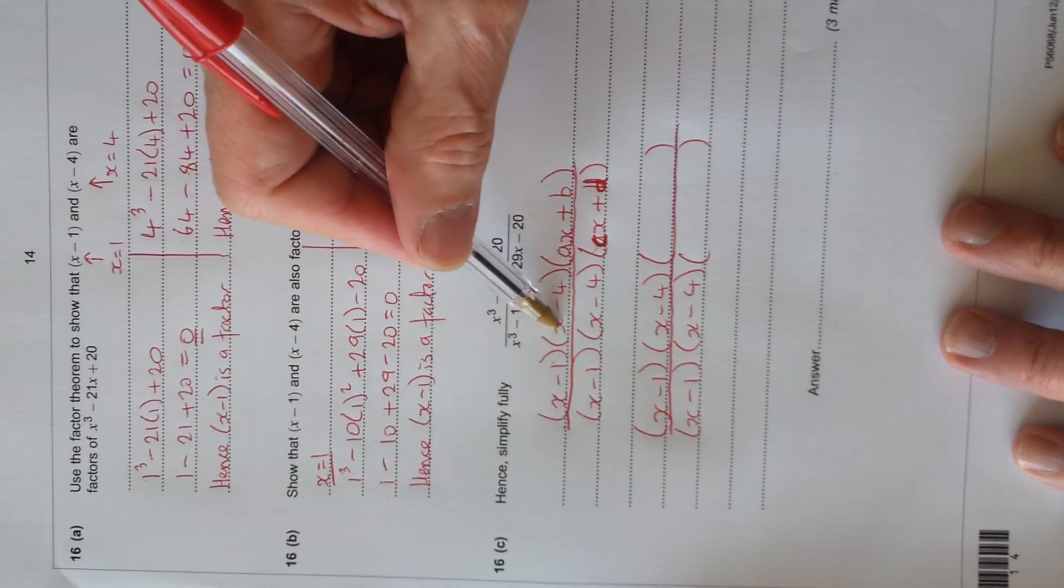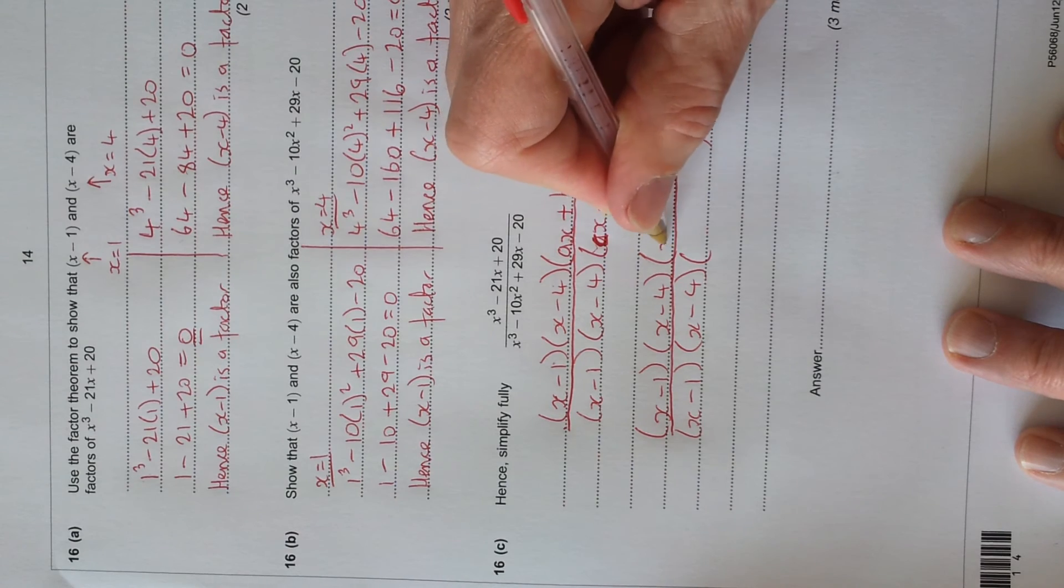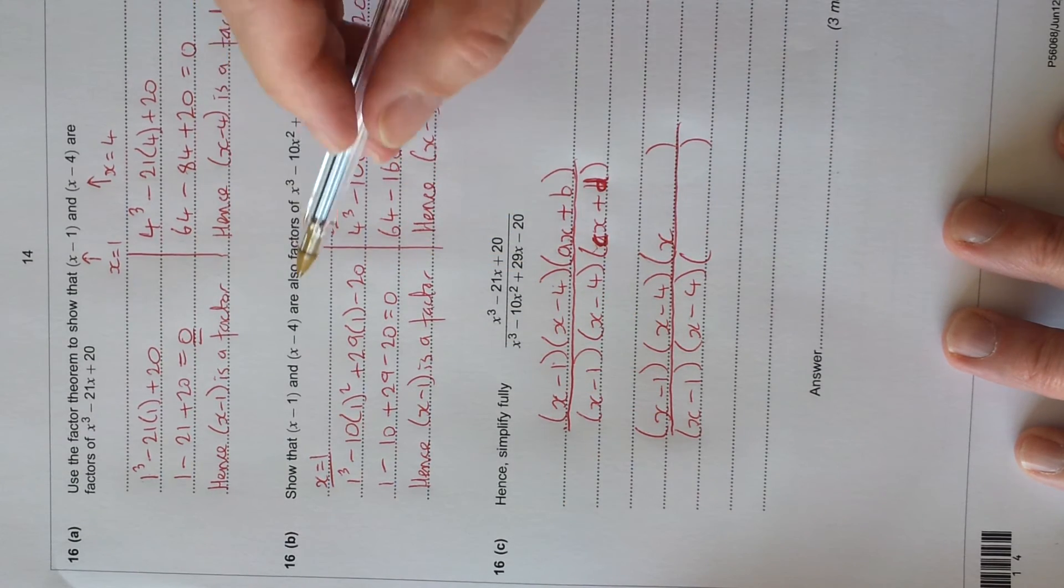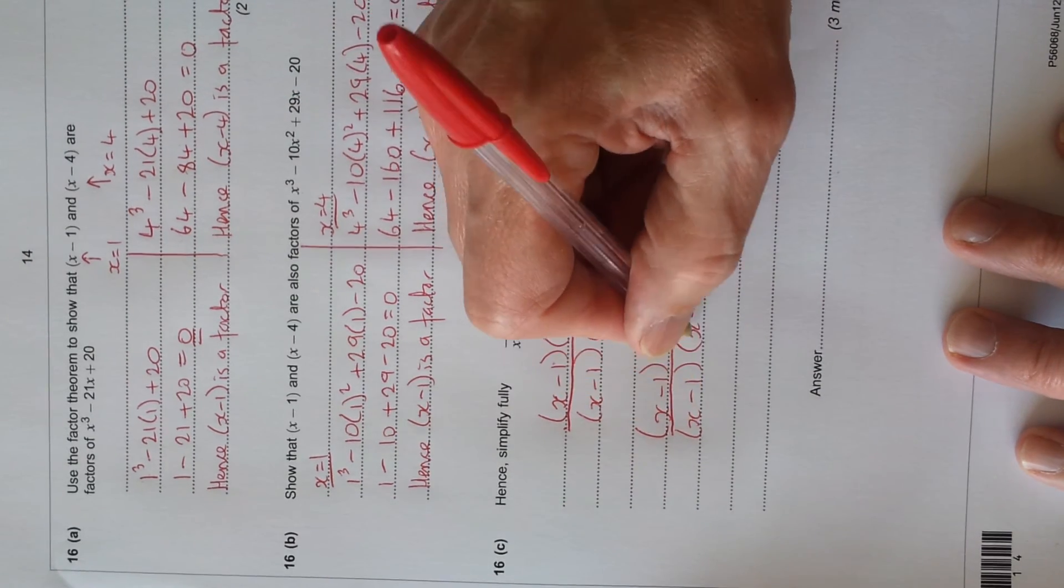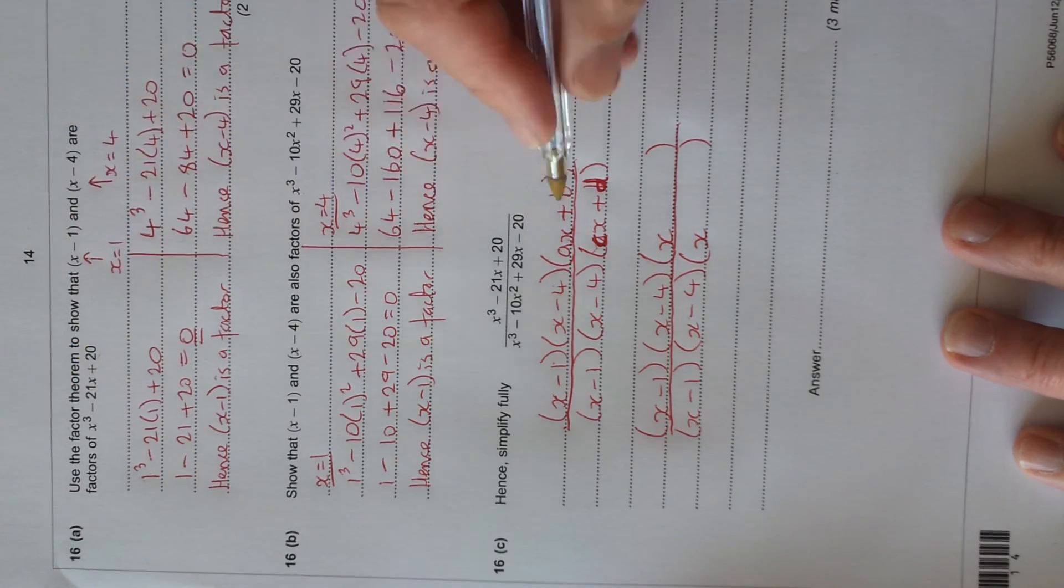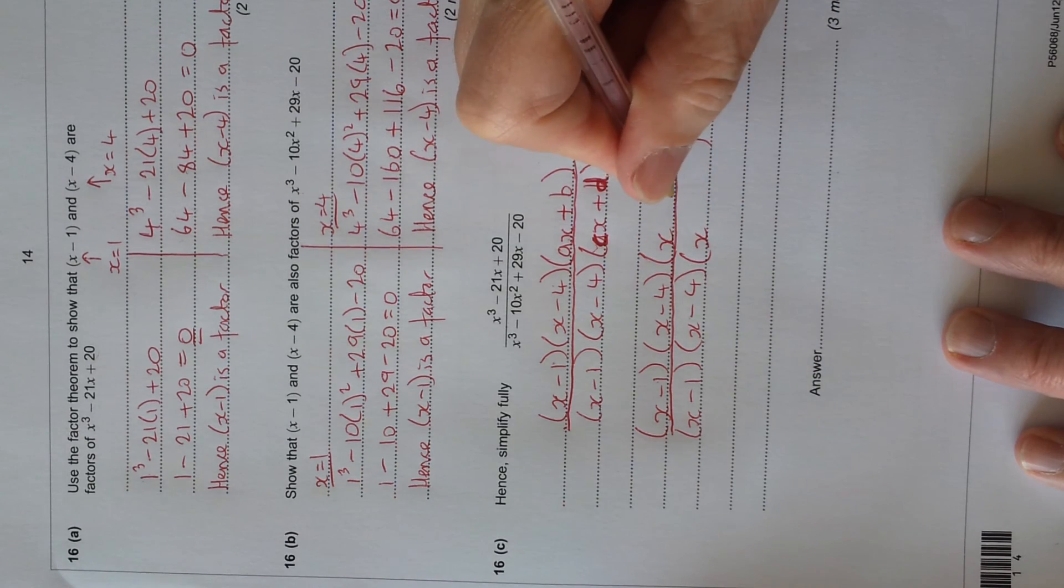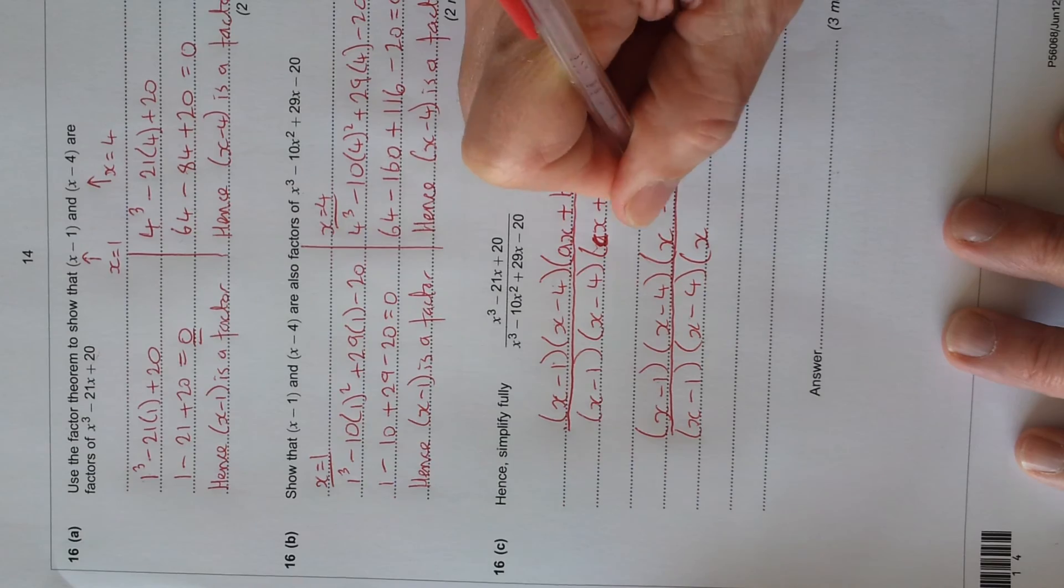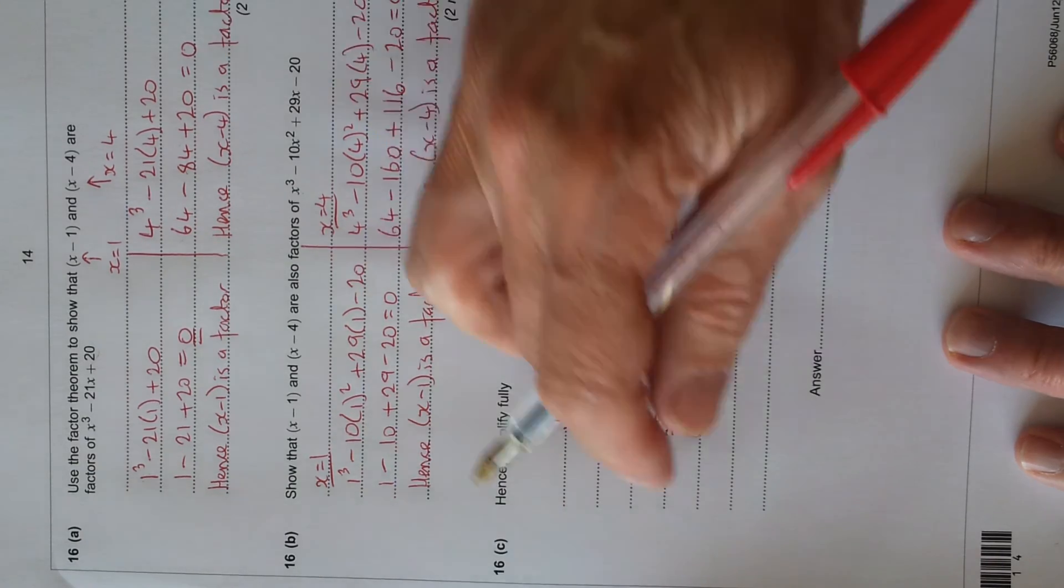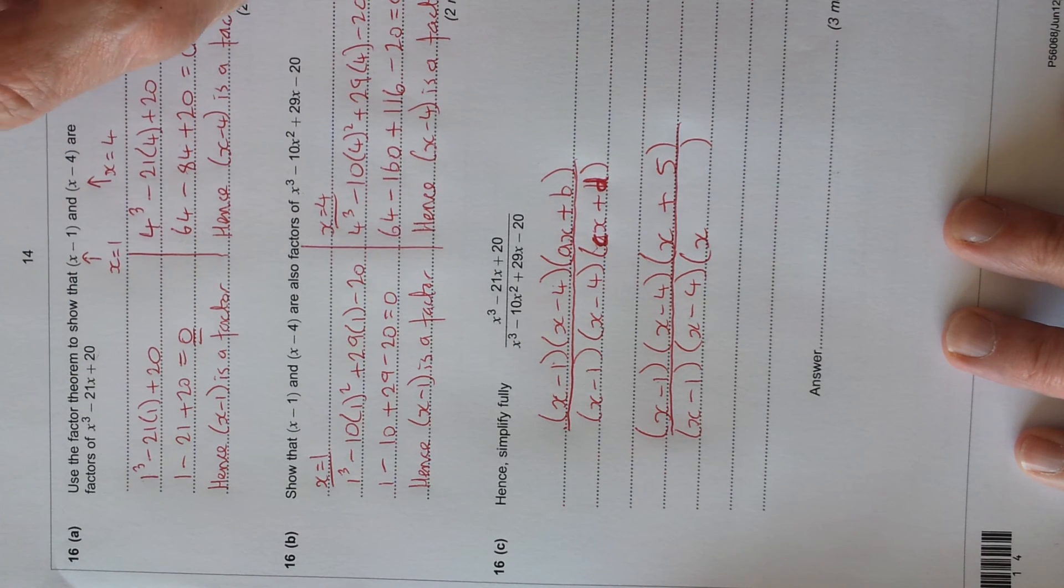And then let's have a look at what we need. So on the top, we've got x times x times something to get x cubed. It's just x. So it's x times x times x. And the bottom part, x cubed, it's going to be the same, x times x times x will give x cubed. Now, what we'll do is we'll just need to look at the constants at the end to give plus 20 on the top. We've got minus 1 times minus 4, which is 4. And 4 times 5 is 20. So that's plus 5. And if you multiply all that out, you'll see that you get back to x cubed minus 21x plus 20.